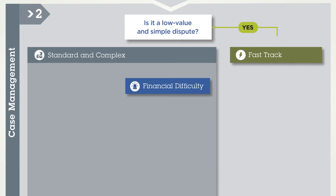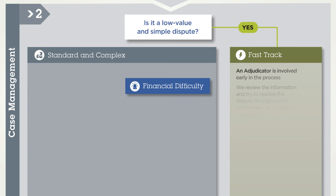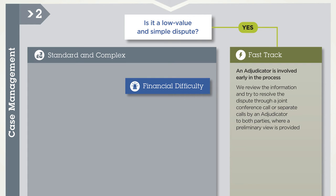If yes, the dispute will move to the fast-track stream. We review the information and try to resolve the dispute through a joint conference call or separate calls by an adjudicator to both parties. If it cannot be resolved through these discussions, an adjudicator will issue a decision.